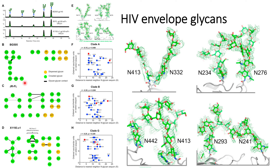We can see that each of them has some glycans that are crowded, as shown here, whereas very few glycans are dispersed. The interaction between glycans is strong in the case of BG505 and X1193.C1, whereas the interactions between the crowded glycans are not as strong in the JRFL variant compared to the other two cases.